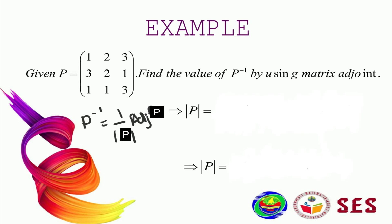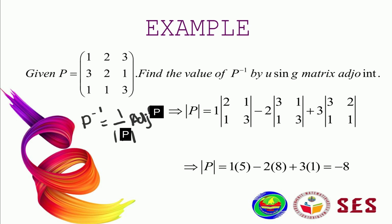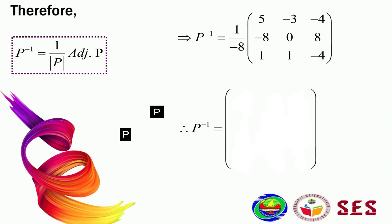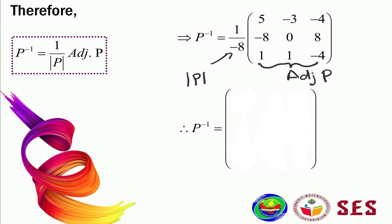The determinant of P is negative 8. The adjoint was already calculated at the beginning of the video. To find the inverse, substitute into the formula: 1 over the determinant multiplied by the adjoint. The answer is: negative 5 over 8, 3 over 8, 1 over 2, 1, 0, negative 1, negative 1 over 8, negative 1 over 8, and 1 over 2. This is how you find the inverse matrix using the adjoint matrix method.